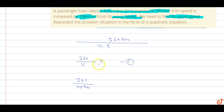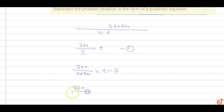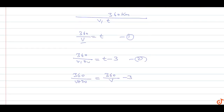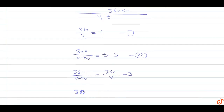The usual speed is V, and this new time is T minus 3. So this gives us 360 upon V plus 20 equals T minus 3 — this is equation two. Now, put the value of T from equation one into equation two: 360 divided by (V plus 20) equals 360 upon V minus 3.